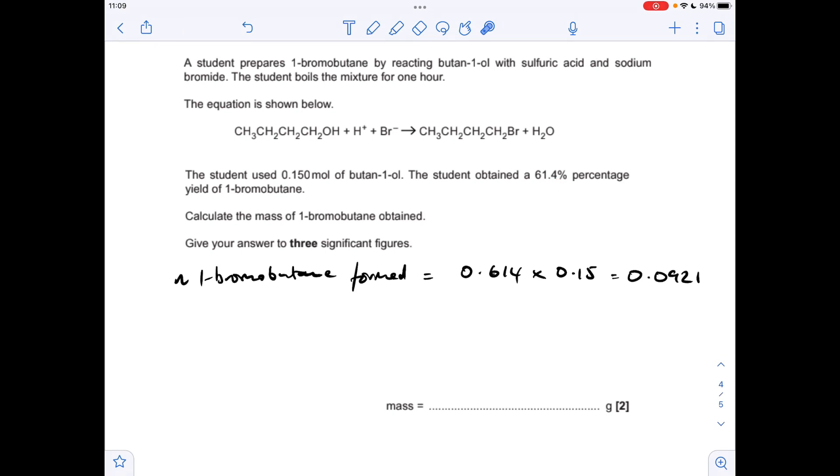So to get the moles of 1-bromobutane formed, we take the percentage yield, so I've just decimalised it, multiply by the expected moles, so that's how many moles are going to form. Then all we need to do is turn that into grams by multiplying by the MR of that, which to three significant figures is 12.6 grams.